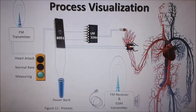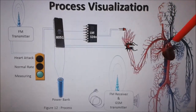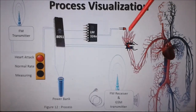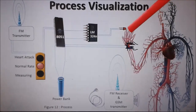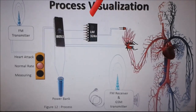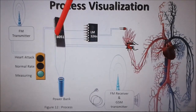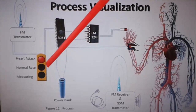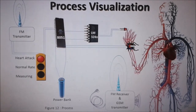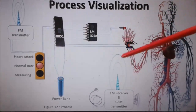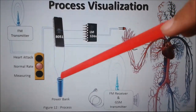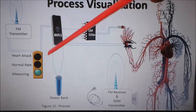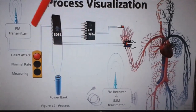Now let's see the process of visualization. The person wears a kit on their hand like a glove. From the fingertip, the heartbeat goes to LM324, which is processed and read by the microcontroller. We have three LED indicators: when the heartbeat is being measured, a green LED is on; when the heart rate is normal, a yellow LED is on; and when it is a case of heart attack, a red LED turns on.